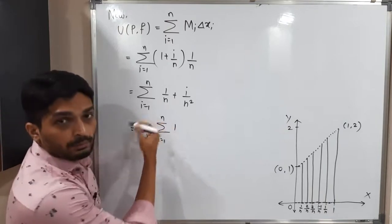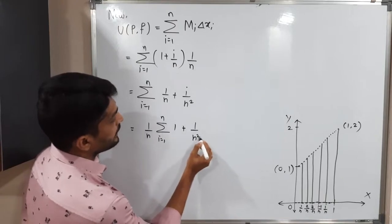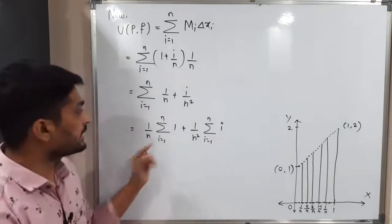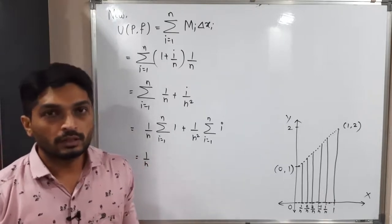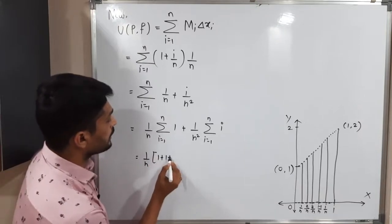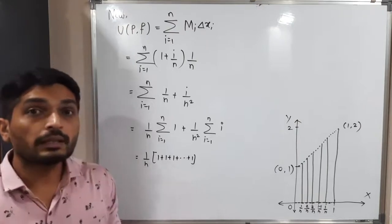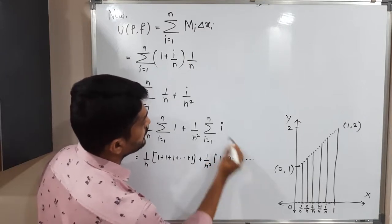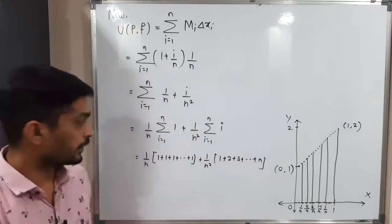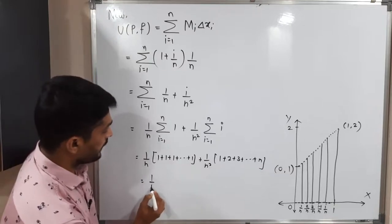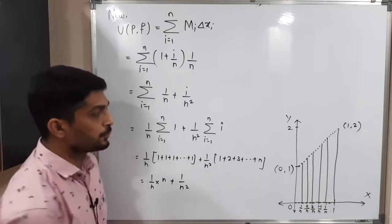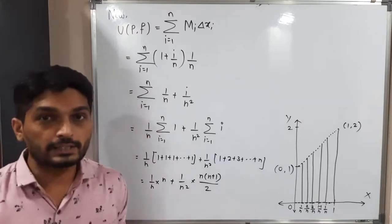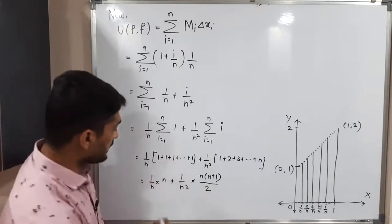We can take separate summations and pull constants outside. The first part gives (1/n) · Σ1 = (1/n) · n = 1. The second part gives (1/n²) · Σi for i = 1 to n. Expanding the second summation, we add 1 + 2 + 3 + ... + n, which is the sum of the first n natural numbers with formula n(n+1)/2.